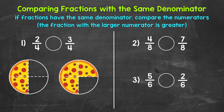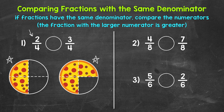Looking at number one, we have two pizzas to help us understand this. Both pizzas are the same size, and both wholes are divided into four equal pieces, so our denominator is four. We are looking at what fraction of each pizza is left. For the pizza on the left, two pieces out of the four total pieces are left, so that's two-fourths. For the pizza on the right, there are three pieces out of the four total pieces left, so that's three-fourths. Three-fourths is more than two-fourths — three-fourths is greater; there's more left of the pizza on the right.